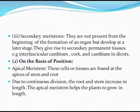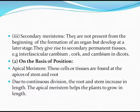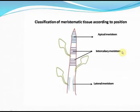Coming to the position-based classification of meristems: apical meristems are found at the apices of stem and root, and due to continuous division, the root and stem increase in length. Meristematic tissues can be found at the apex, at the intercalary position, and at the lateral position towards the sides.